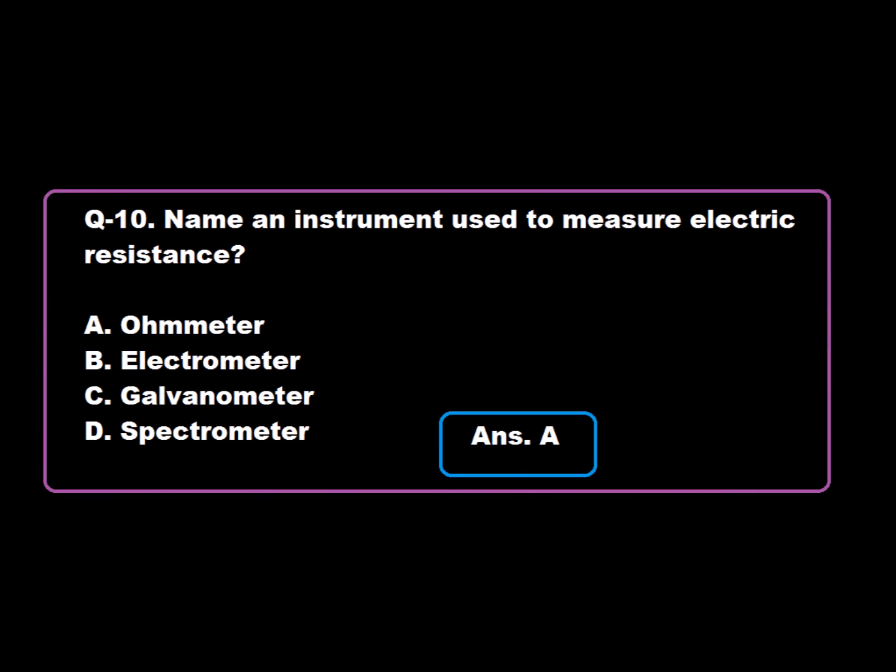Question 10: Name an instrument used to measure electric resistance — Option A: Ohm meter, Option B: Electrometer, Option C: Galvanometer, Option D: Spectrometer. Option A is correct. Ohm meter is an instrument used to measure electric resistance. Hence, Option A is correct.